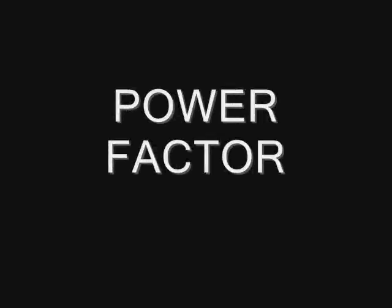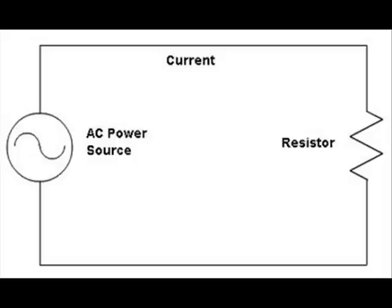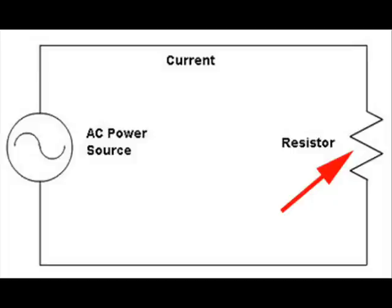We are going to discuss about power factor. For that, we will first consider a simple circuit consisting of an alternating voltage source across which a purely resistive load is connected. For this voltage source, a current will flow through the load. As the load is purely resistive, there will be no phase difference between the voltage and the current in the circuit.